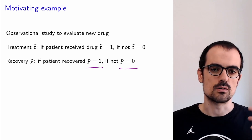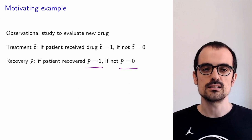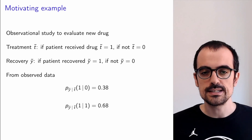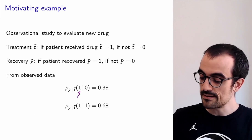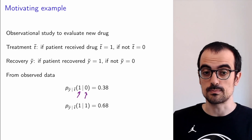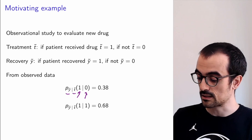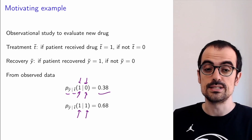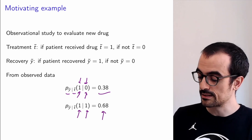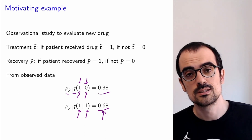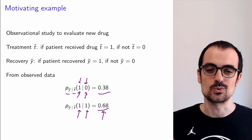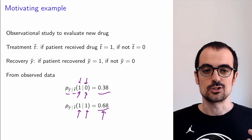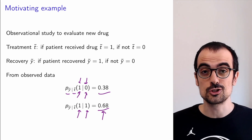We look at an observational study where we give some patients the drug and don't give others the drug, then we check. What we observe is that the probability a patient recovers if they did not receive the drug — captured by the conditional PMF of Y given T evaluated at 1 and 0 — is 0.38. The probability they recover if they did receive the treatment is 0.68. So there's a strong temptation to say the drug works, since 68% of treated patients recovered while only 38% of untreated patients recovered.